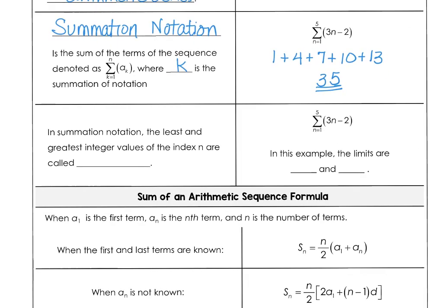In summation notation, the least and greatest integer values of the index n are called the limits. In our example over here, this is the lower limit, where n equals 1. And then 5 is our upper limit. That's where we stop. So the limits are 1 and 5.